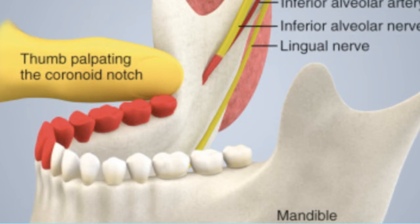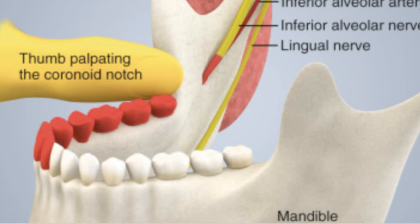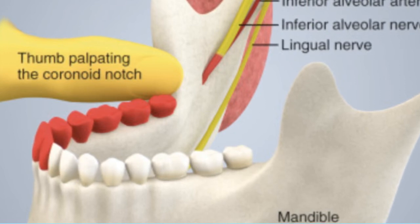It is very important to aspirate before giving the injection in order to check if you are in the right place, because you might hit the inferior alveolar artery, not the inferior alveolar nerve.